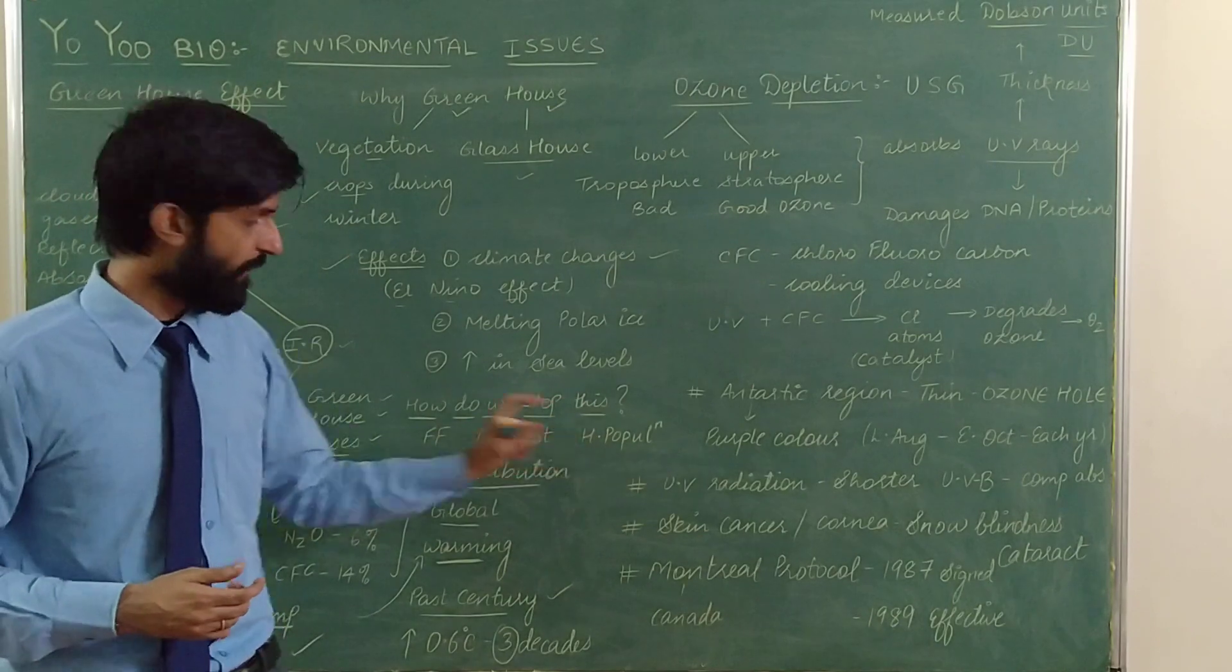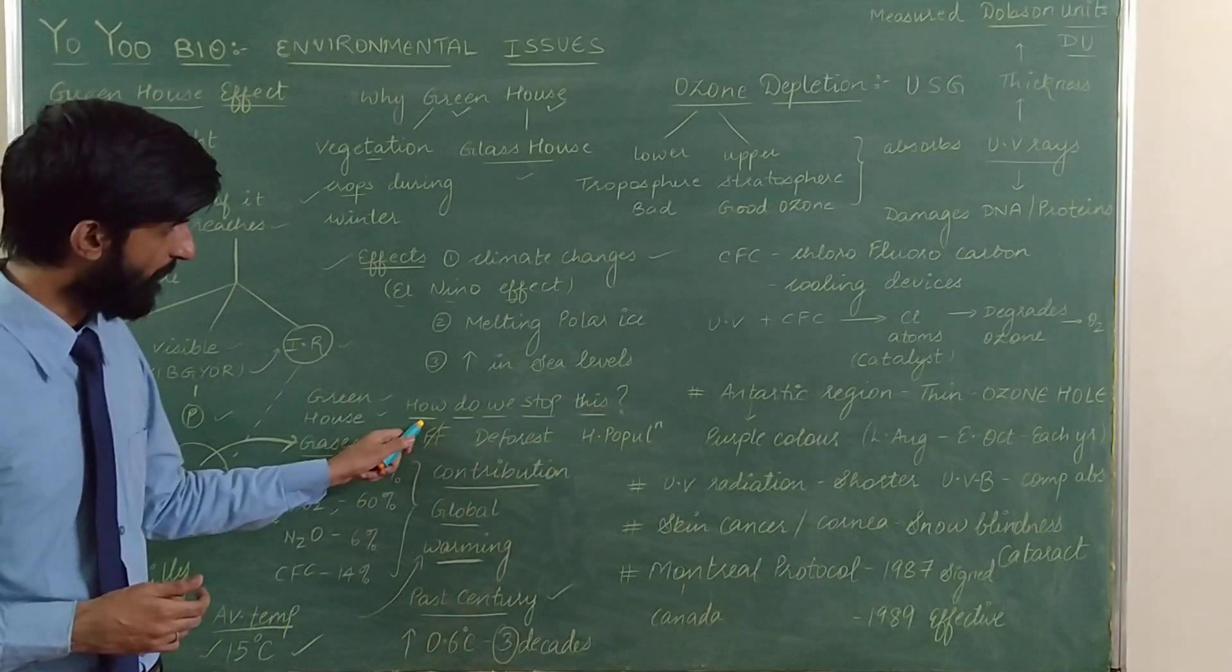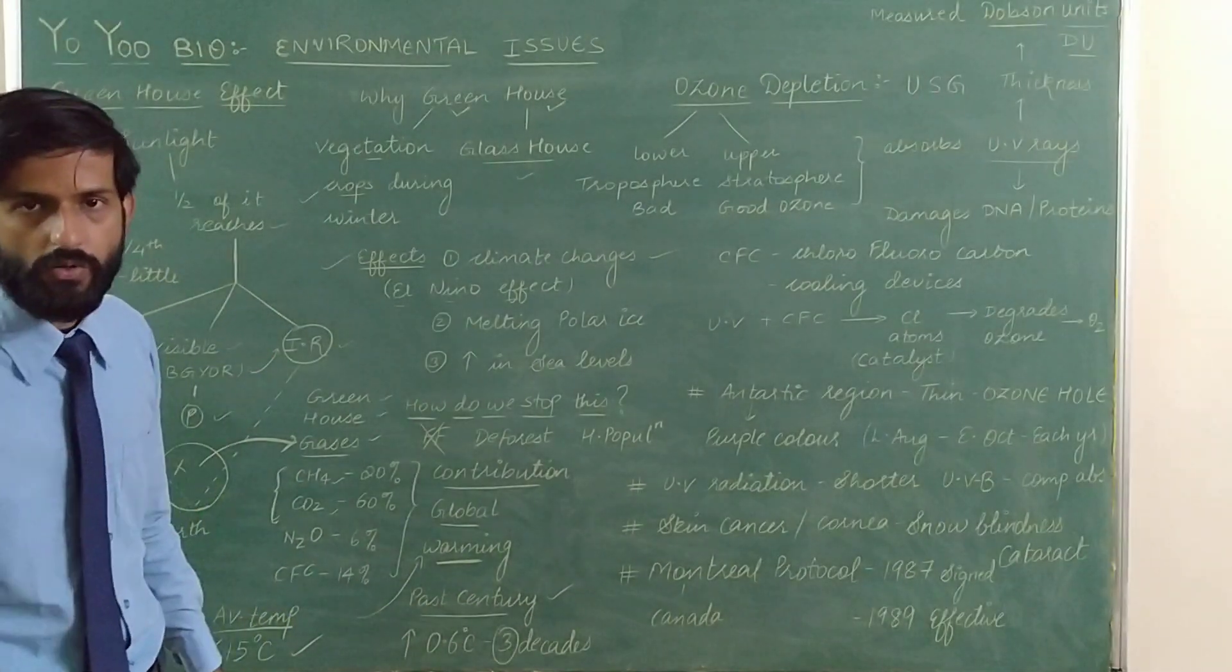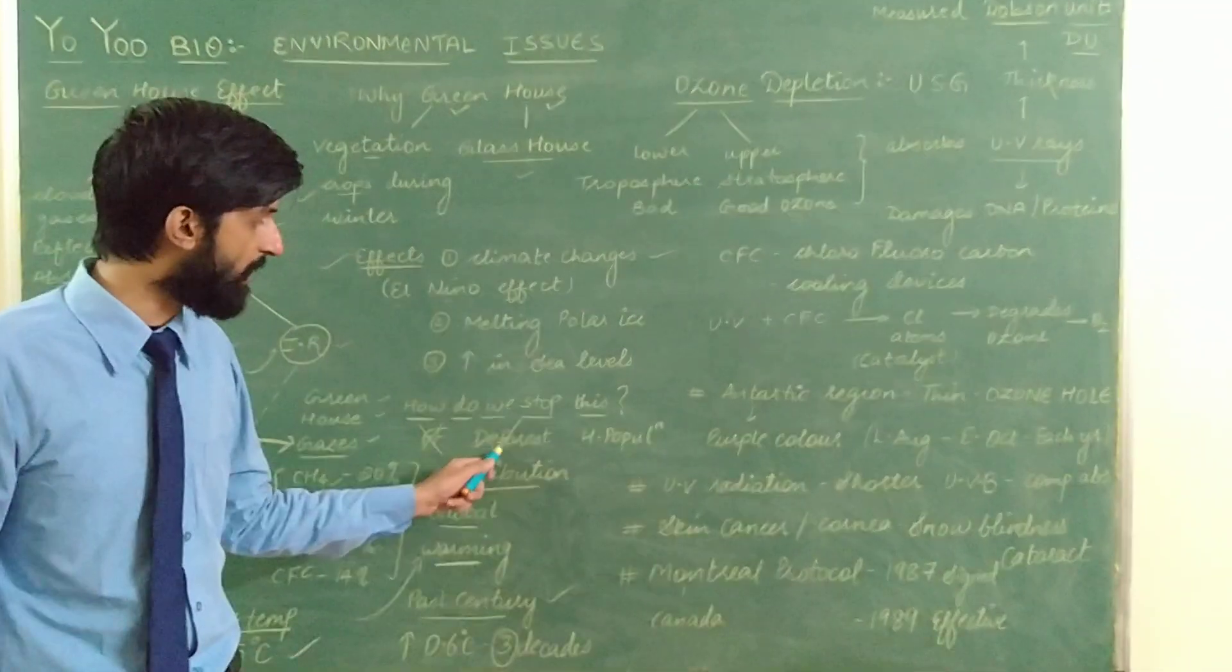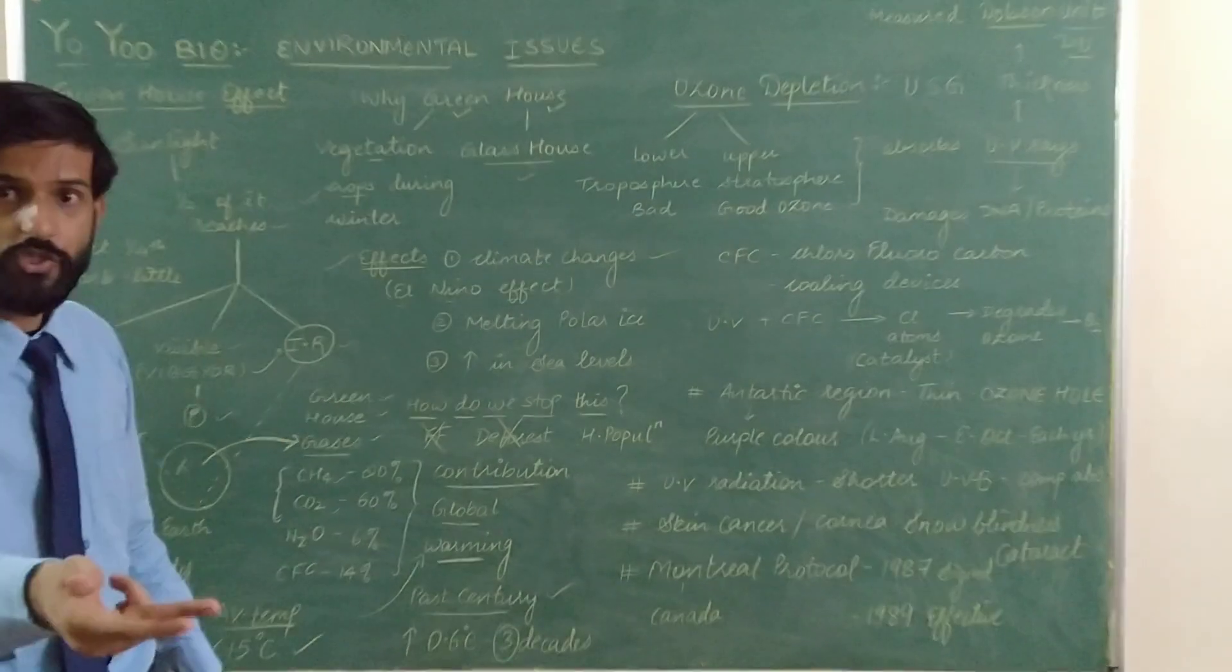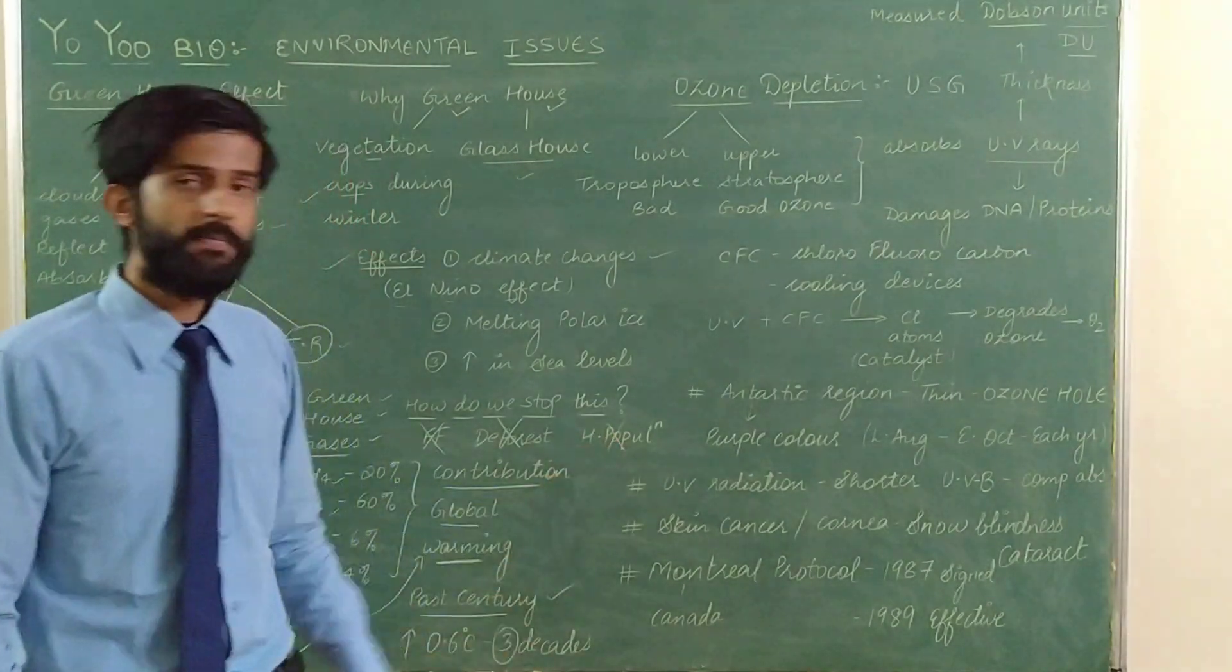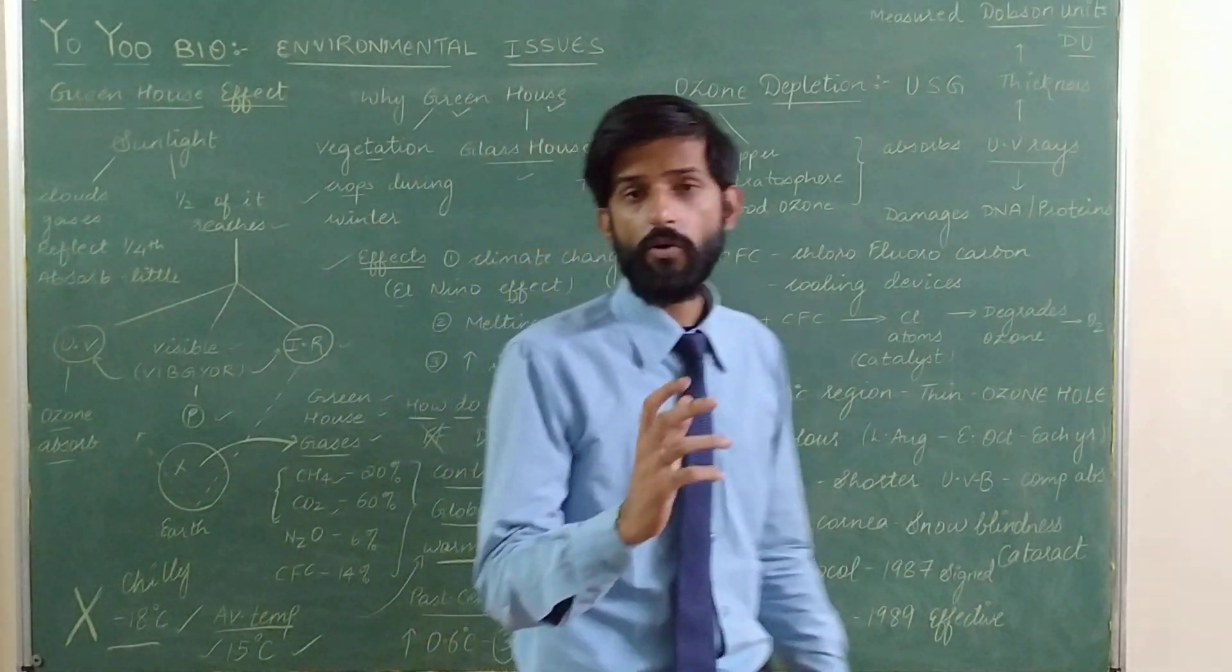How do we stop this greenhouse effect? Very simple: don't use fossil fuels like petrol, diesel in automobiles and industries. Deforestation should not be done. Reforestation and afforestation should be promoted. Human population should be controlled.